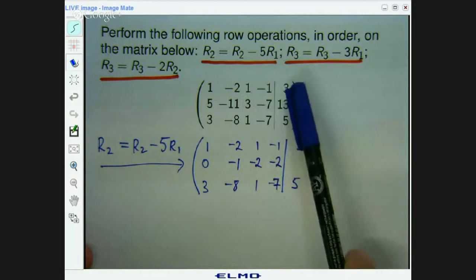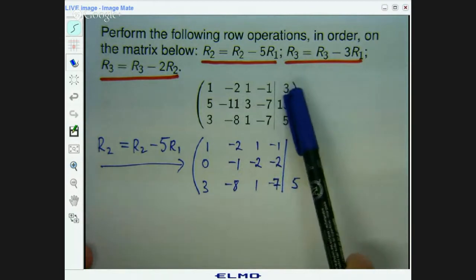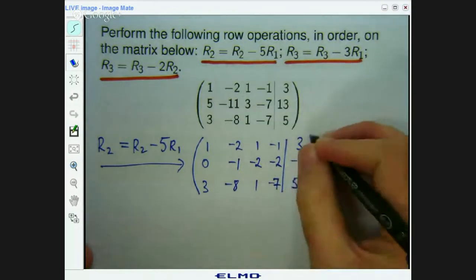13 minus 5 times 3. So that's 13 minus 15, negative 2. Okay. Can you see how tedious it is? And it's easy to make a mistake. All right? So slow and steady is the way to go.